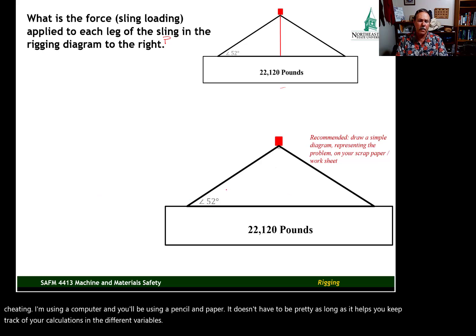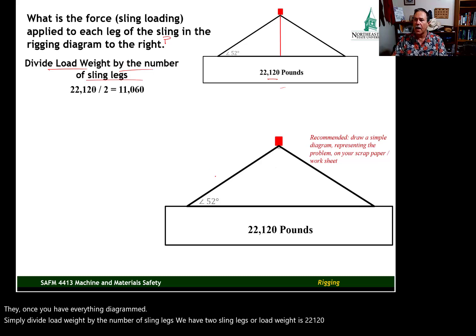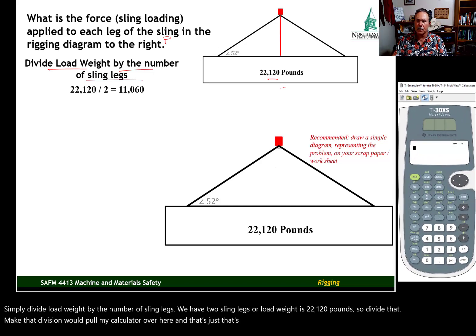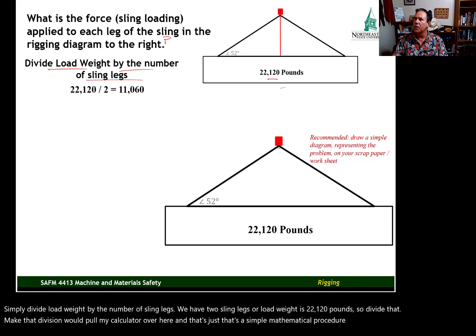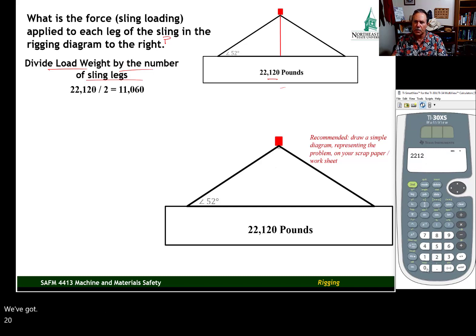And once you have everything diagrammed, simply divide load weight by the number of sling legs. We have two sling legs. Our load weight is 22,120 pounds. So, divide that. Make that division. Let me pull my calculator over here. And that's a simple mathematical procedure there, but let's go ahead and do it on the calculator. Here, we've got 22,120, divided by 2, enter, 11,060.